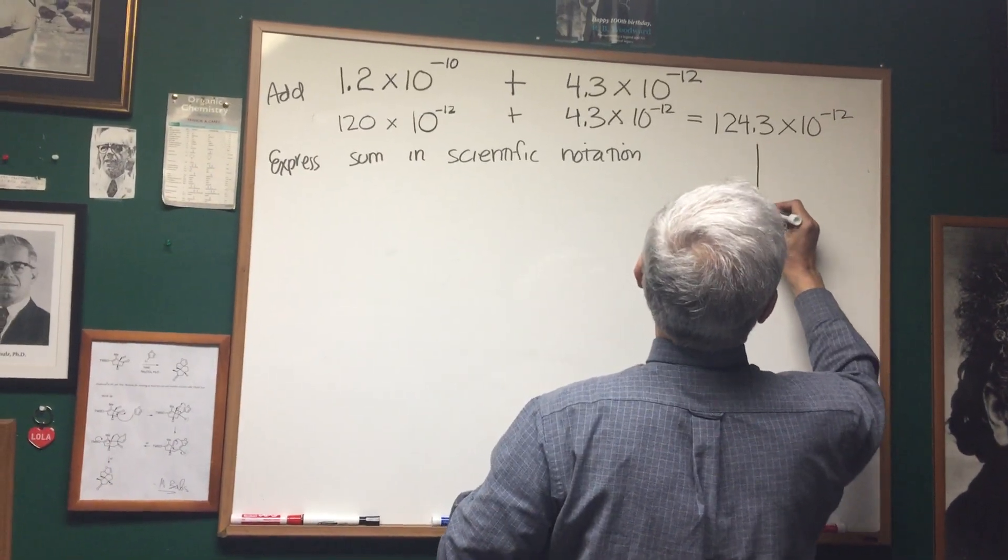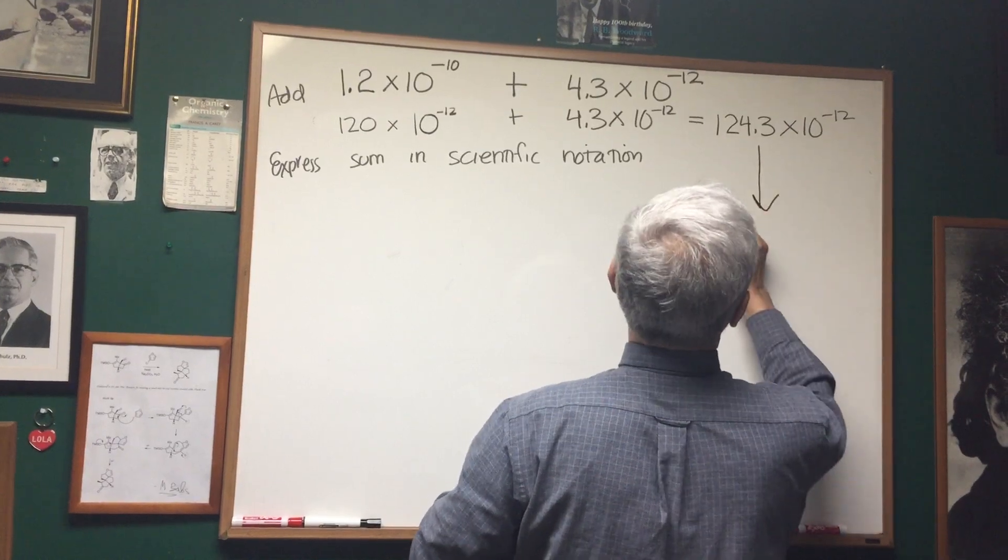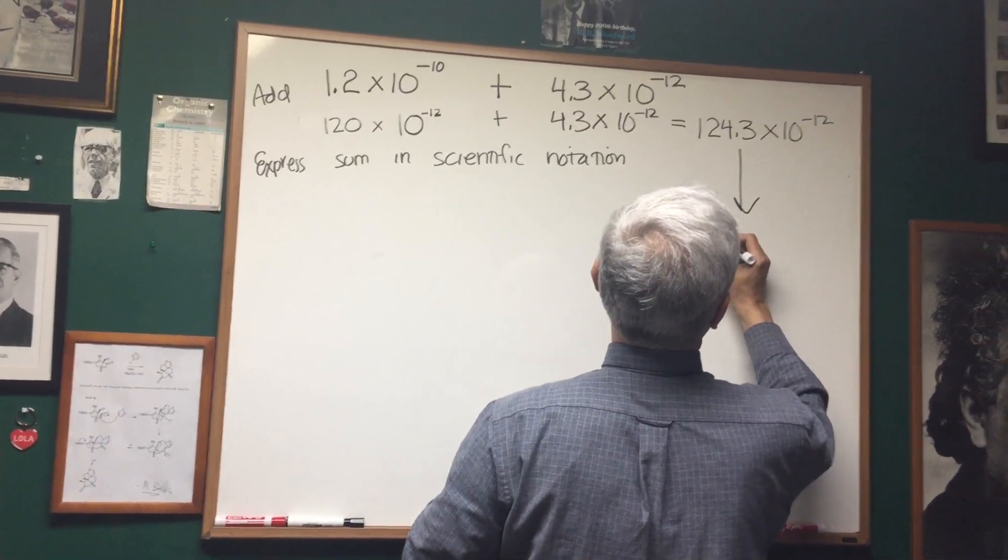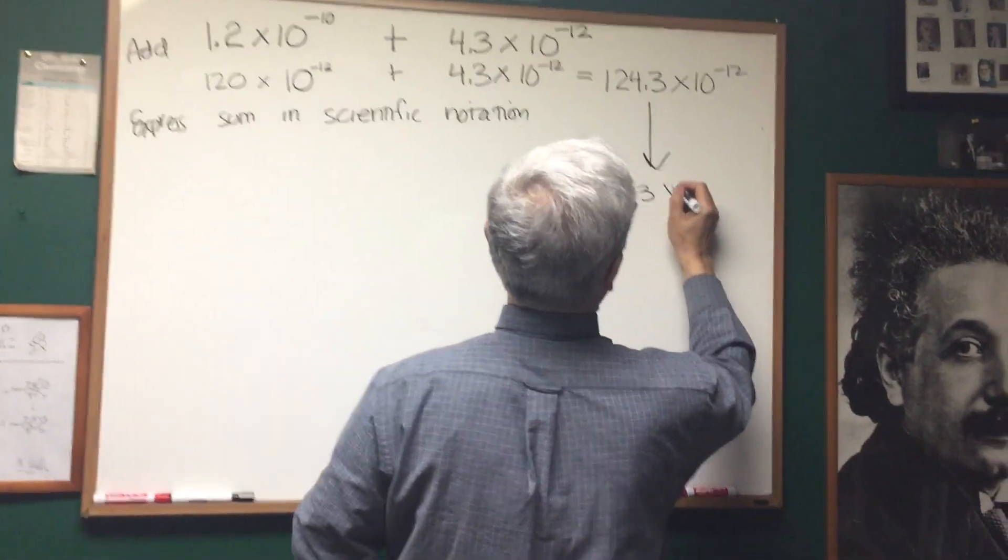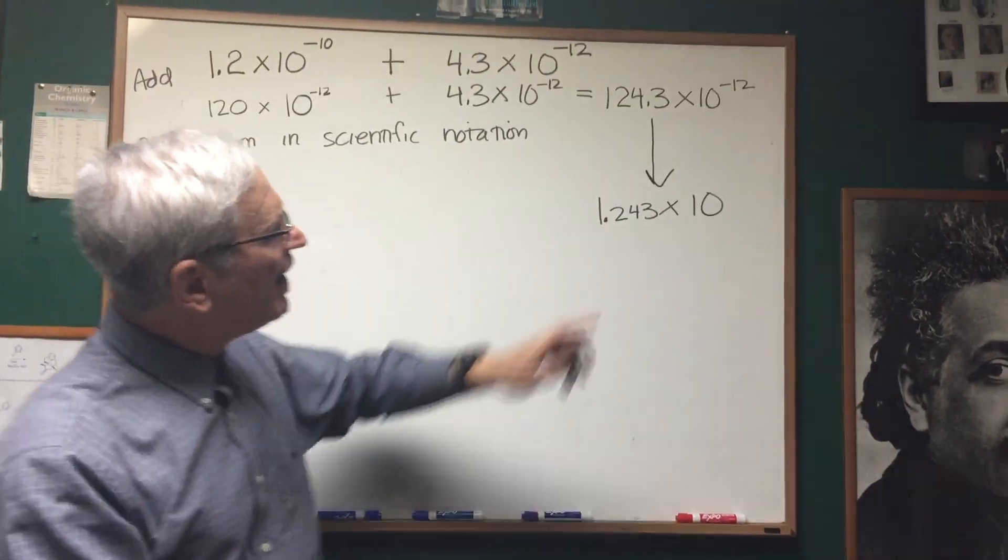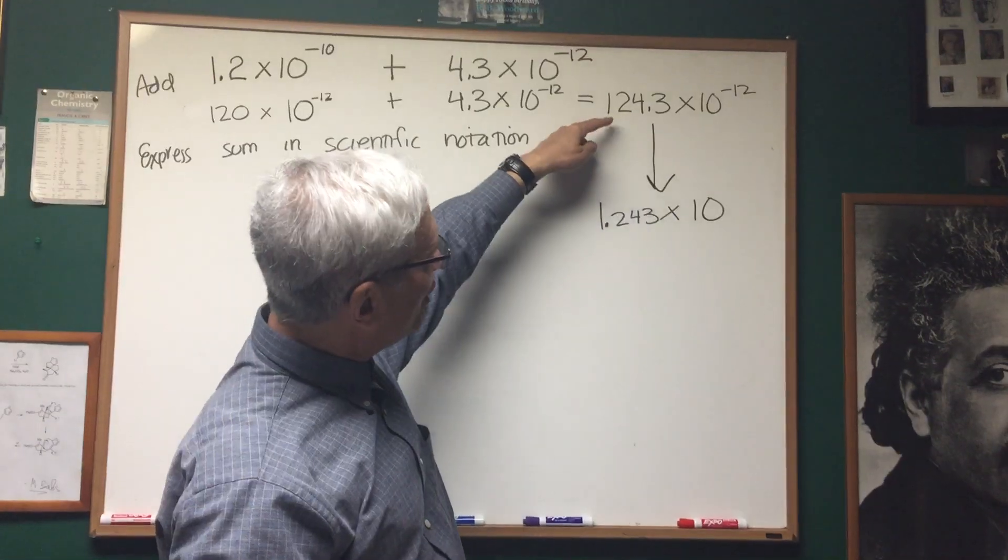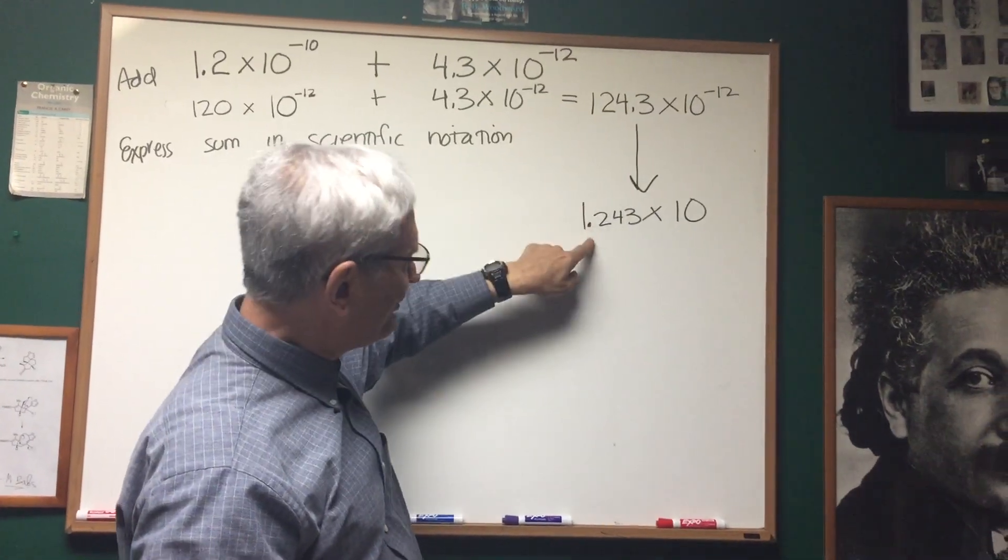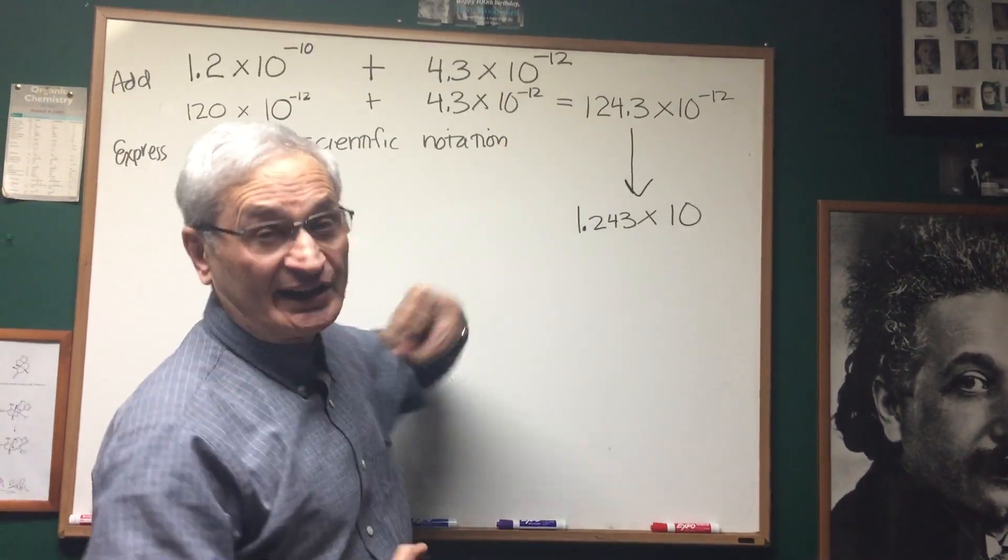We want to take this expression and write it. We want that first number to be 1.243. We're going to have to make an adjustment to the second power, to the power of 10. Now, what did we do to turn 124 into 1.24? We divided by 100.